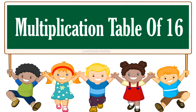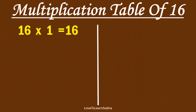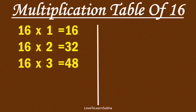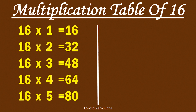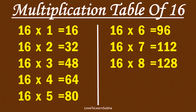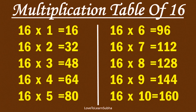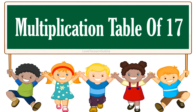Multiplication table of 16. 16×1 is 16, 16×2 is 32, 16×3 is 48, 16×4 is 64, 16×5 is 80, 16×6 is 96, 16×7 is 112, 16×8 is 128, 16×9 is 144, 16×10 is 160.